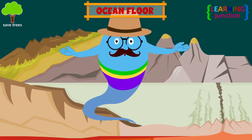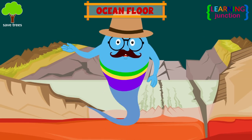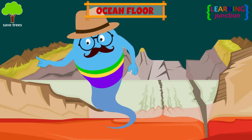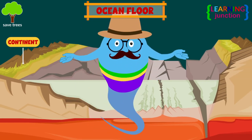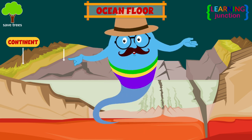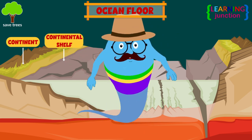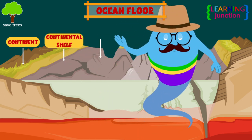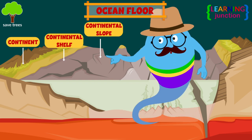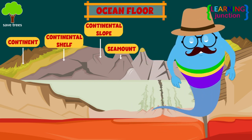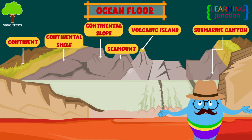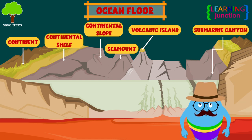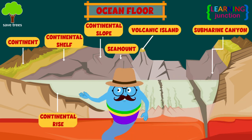Let me show you the ocean floor — it has so many levels. This large land mass is the continent. The shallowest part of the oceans is called the continental shelf. This is the continental slope. Here is the seamount, volcanic island, and the submarine canyon.